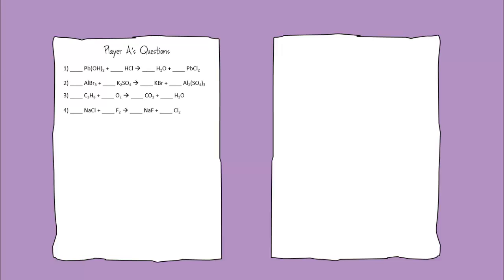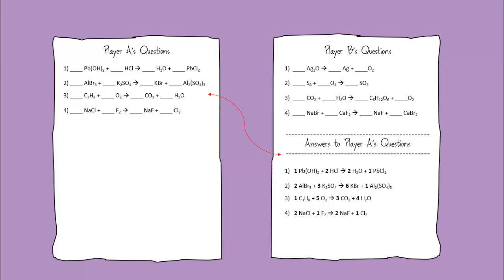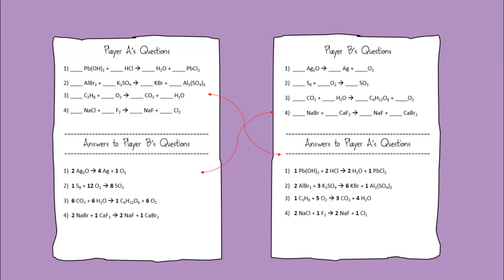Player A gets a set of questions, and Player B gets a different set. The answers to Player A's questions are on the bottom of Player B's sheet, and the answers to Player B's are at the bottom of Player A's sheet.